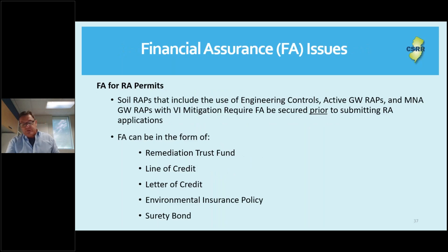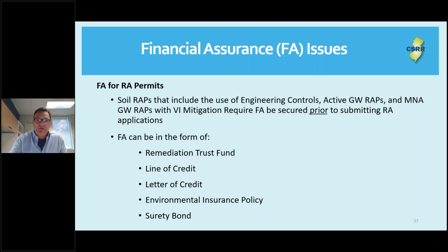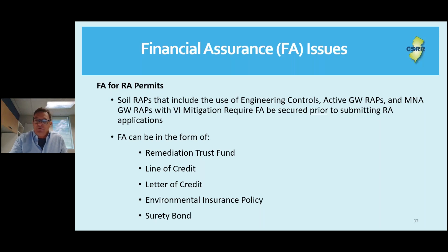Financial assurance issues: a number of permit applications came in with incorrect financial assurance documents. Any soil WRAP that includes the use of an engineering control, active groundwater WRAPs, and MNA groundwater WRAPs with VI mitigation require financial assurance to be secured prior to submitting your remedial action permit applications. Make sure you secure it before you submit your WRAP application and make sure you're grabbing the correct form from DEP's website.